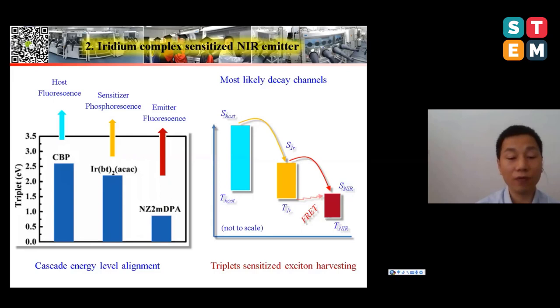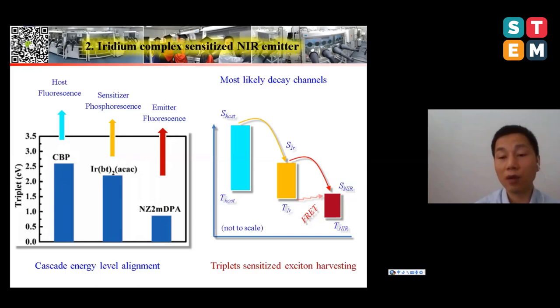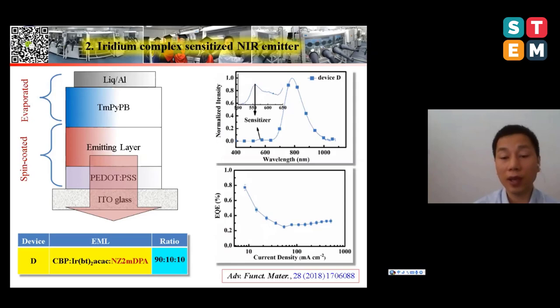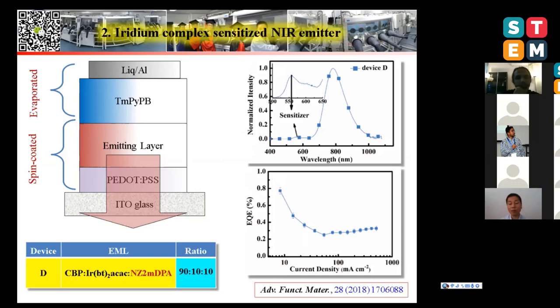In the electroluminescent spectra, there is only a very small residual emission from the sensitizer. The emission covers from 650 nanometers to 1000 nanometers — a very strong emission in the NIR region. The external quantum efficiency is about 0.8%, which looks modest, but in terms of NIR emitters this value was one of the highest ever reported in 2018.